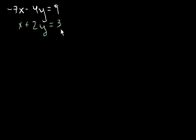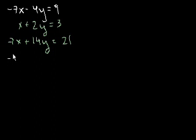So let's multiply this bottom equation by 7. And the whole reason why I want to multiply it by 7 is because I want this to cancel out with this. So if you multiply it by 7, you get 7x plus 14y is equal to 21. Let's write that first equation down again. Minus 7x minus 4y is equal to 9.